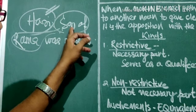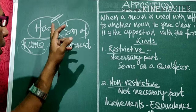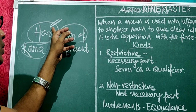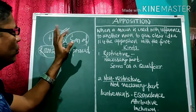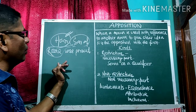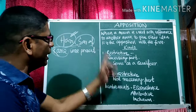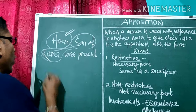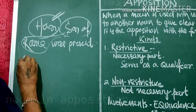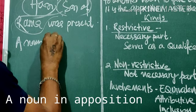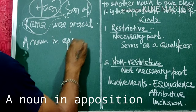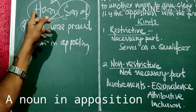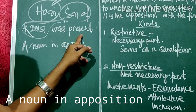The second Apposition is used to give a clear idea about the first one. So when a noun is used with reference to another noun to give a clear idea, it is the Apposition of the first one. This is called a noun in Apposition — for example, 'Hari, son of Ramo, was present.'